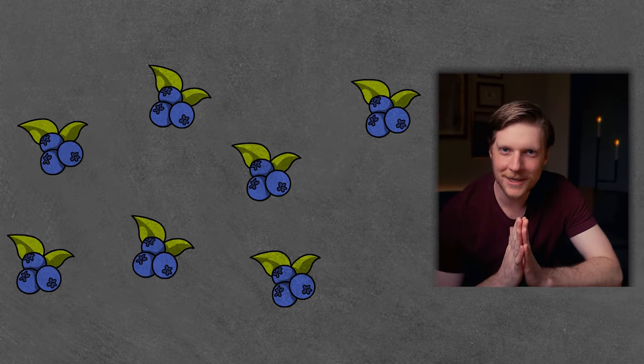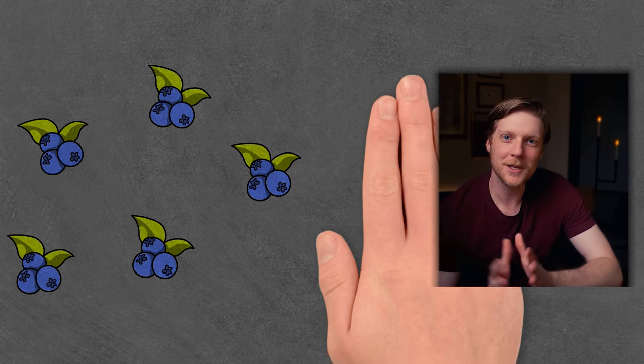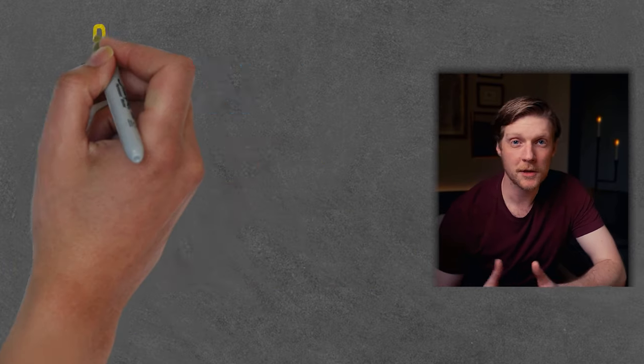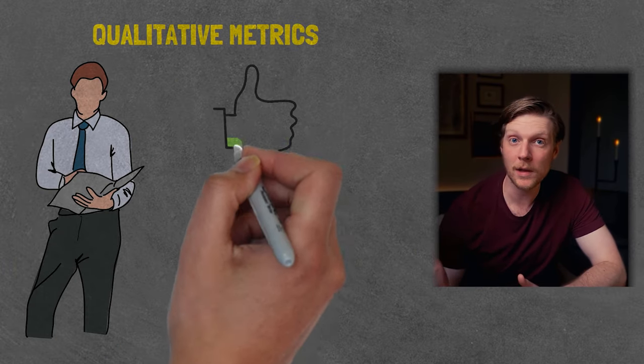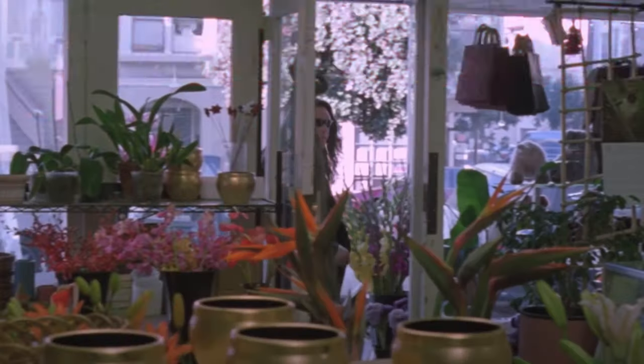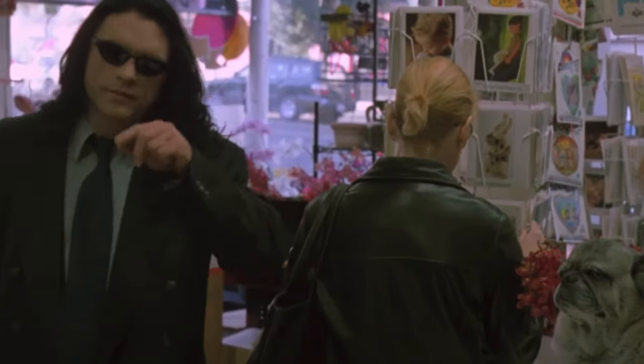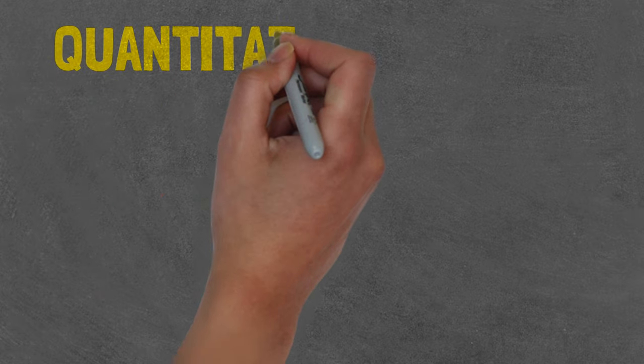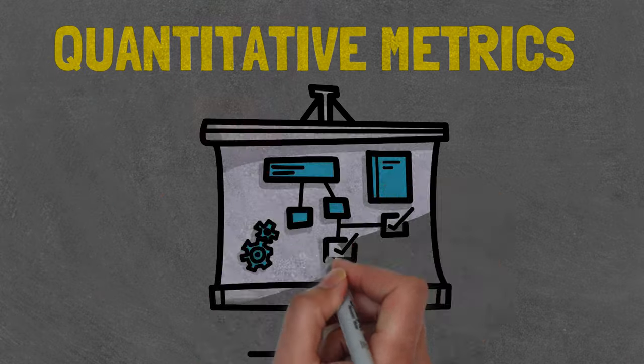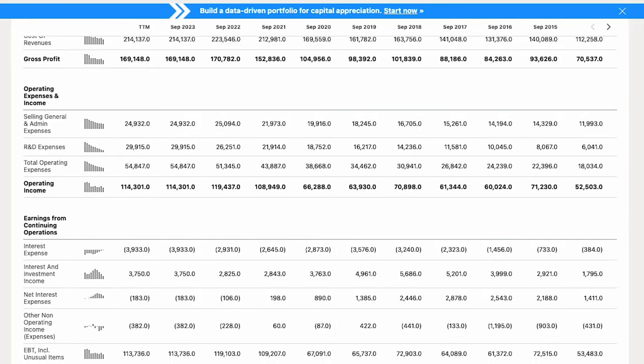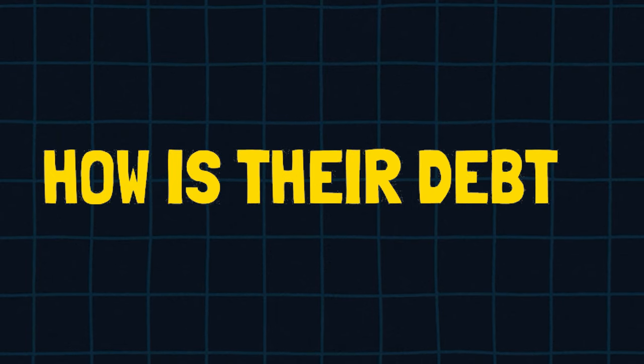I love blueberries — let me use them as an example. The smaller blueberries are typically packed with more flavor. One way to ensure you only eat the tastiest blueberries is to pick them out one by one by hand. This is like picking stocks. You can evaluate companies based on qualitative metrics — you might really like their product or their customer service — or on quantitative metrics like financial statements, revenue growth versus expenses, and debt levels. This takes a lot of expertise and a lot of time.